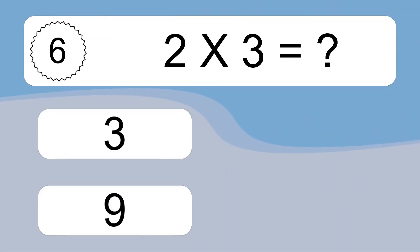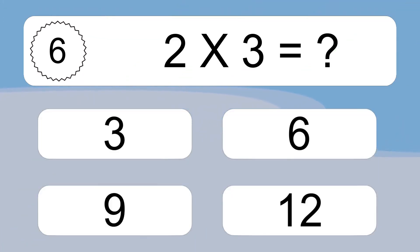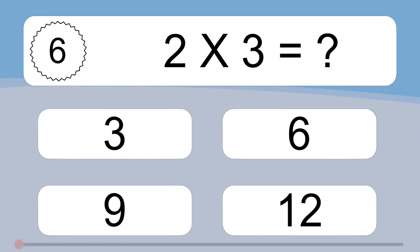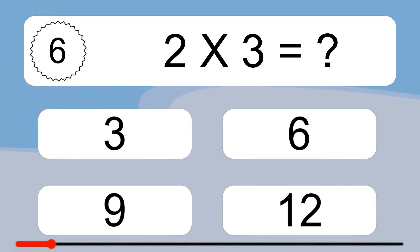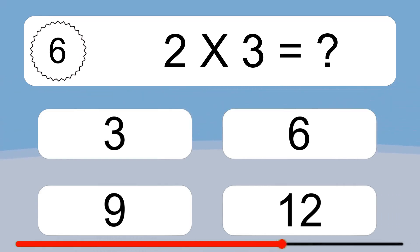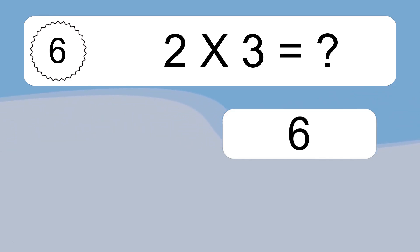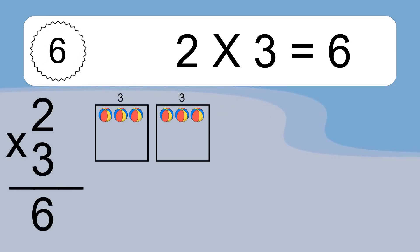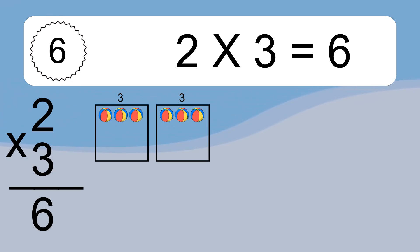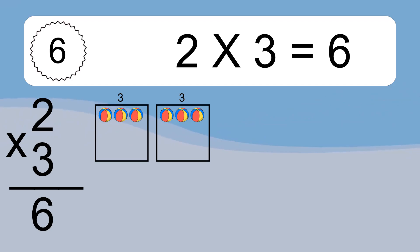2 times 3 equals what? 2 times 3 equals 6. We have 2 boxes, and each box has 3 colorful balls inside. If you count all the balls in all the boxes together, you will have 2 times 3 balls. This equals 6 balls.